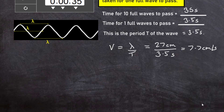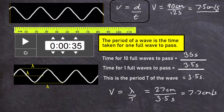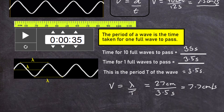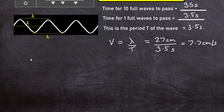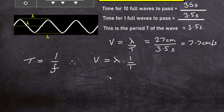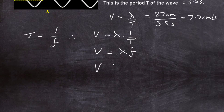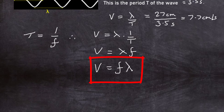We can measure wave speed by finding the distance traveled over a given time, or by dividing the wavelength by the period. We also know that the period T equals 1 divided by the frequency f (measured in hertz). So wave speed v equals lambda divided by T, which is the same as lambda times f. This gives us the key equation: wave speed v equals frequency times wavelength — v = fλ — a fundamental equation in the study of waves.